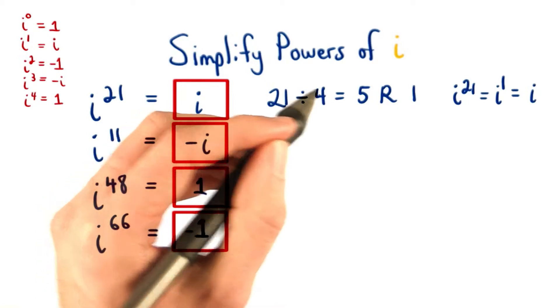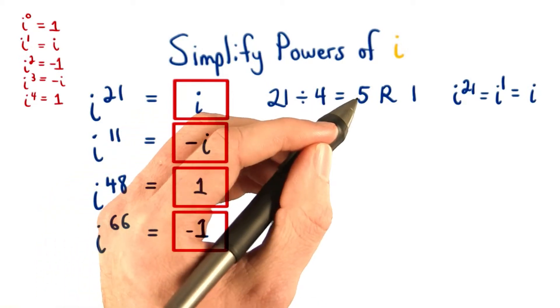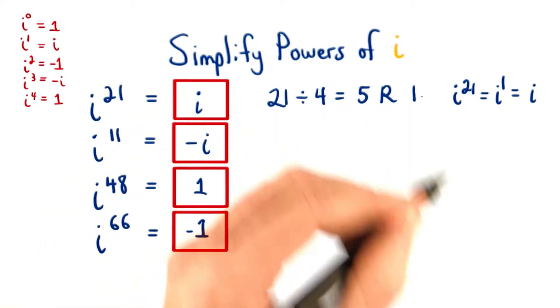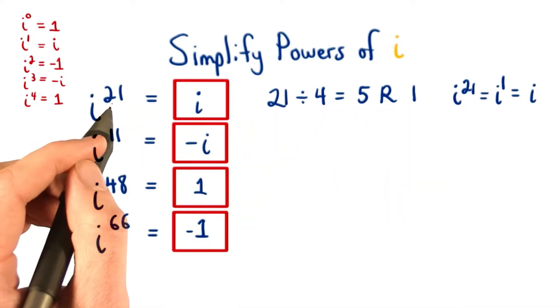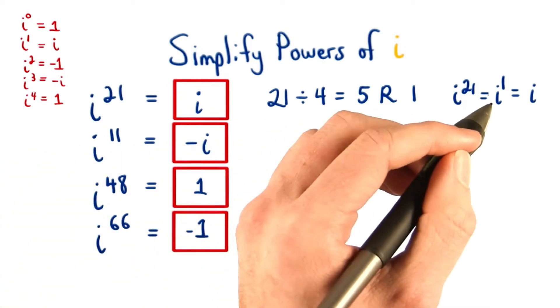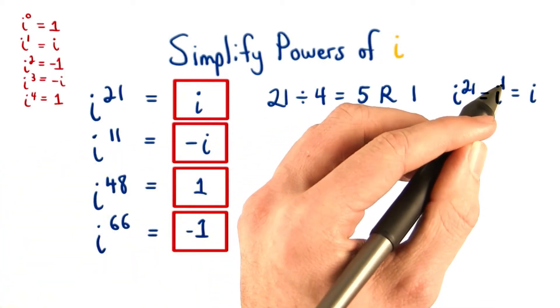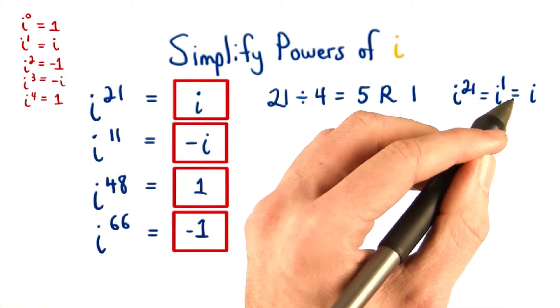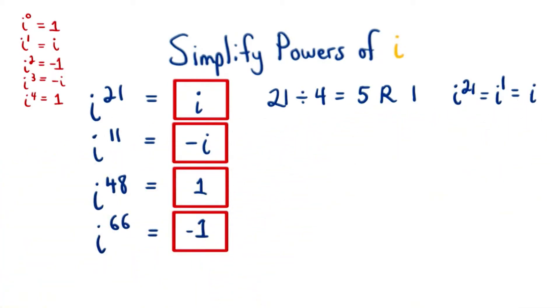Doing so, we get 5 remainder 1. This means i to the 21st power is equivalent to i to the 1, which we know is really just i.